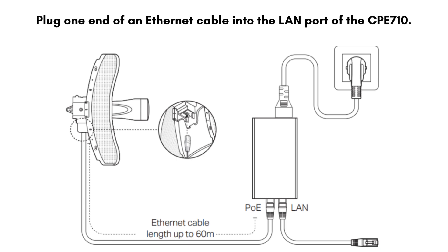Plug another ethernet cable into the LAN port on the PoE adapter. Connect the other end to your computer or a network switch. Then plug the PoE adapter into a power outlet.